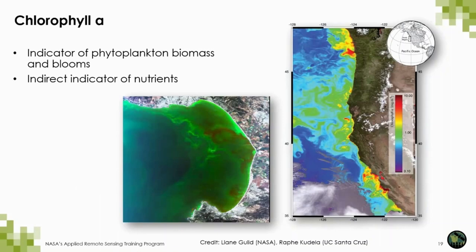Chlorophyll A is a classic indicator of primary production in the ocean and coastal zone. It is the main pigment of most photosynthetic organisms, from microscopic to higher plants, and its concentration is controlled to some extent by the amount of nutrients present in the water column. In clear reef water, chlorophyll concentrations do not usually go beyond a couple of milligrams per cubic meter, whereas in highly productive areas such as Monterey Bay, California, concentrations can exceed 10 milligrams per cubic meter. Areas influenced by upwelling events may have even higher chlorophyll concentrations.